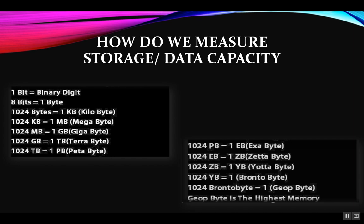Going further, 1 kilobyte is equivalent to 1024 bytes, 1 megabyte is equivalent to 1024 kilobytes, then comes 1 gigabyte, 1 terabyte, petabyte, exabyte, zettabyte, yottabyte, brontabyte, and finally 1024 brontabytes are equal to 1 geobyte, which is the highest memory capacity measure we know about till date, though we can have many more going forward as the amount of data keeps increasing.